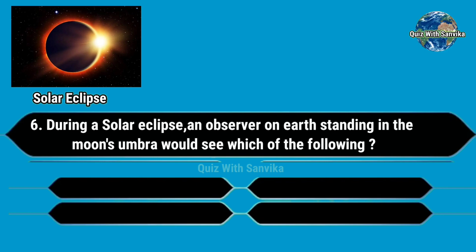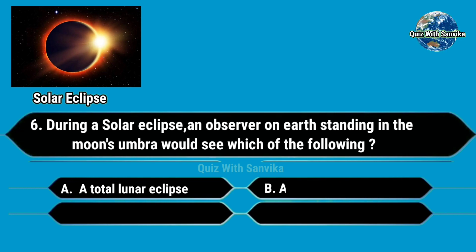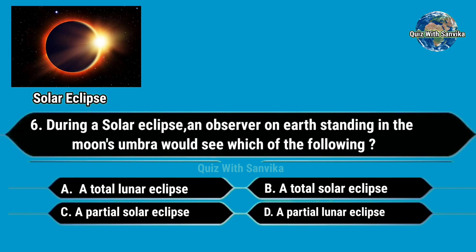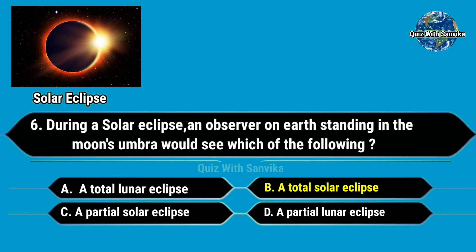During a solar eclipse, an observer on Earth standing in the moon's umbra would see which of the following? Options are A. A total lunar eclipse, B. A total solar eclipse, C. A partial solar eclipse, D. A partial lunar eclipse. Answer is B. A total solar eclipse.